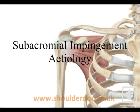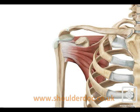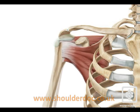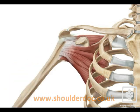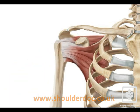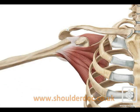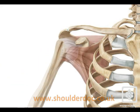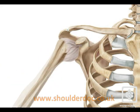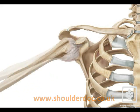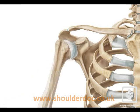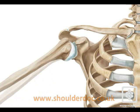Subacromial Impingement Etiology. The rotator cuff works as a depressor and centraliser of the humeral head and the glenohumeral joint. As the arm is abducted and elevated, the rotator cuff depresses the humeral head, allowing it to glide easily underneath the acromion.